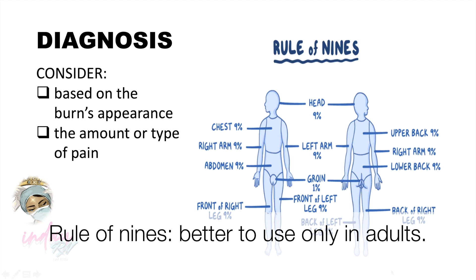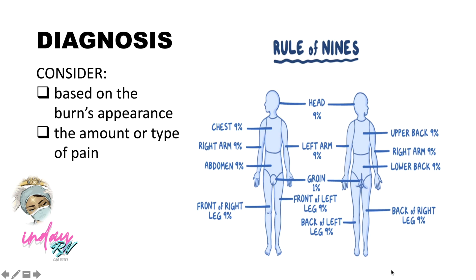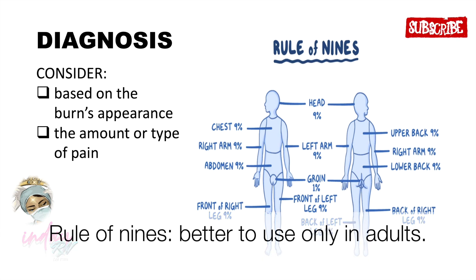In adults, the severity of a burn is calculated using the rule of nines, which evaluates distinct sections of the body's total surface area for the presence and degree of burns. Eleven sections each make up nine percent of the body surface area: the head, chest, right arm, abdomen, front of right leg, left arm, front of left leg, back of left leg, back of right leg, lower back, and upper back. The groin accounts for the missing one percent. The rule of nines is commonly used in adult patients; other methods will be presented in future videos.